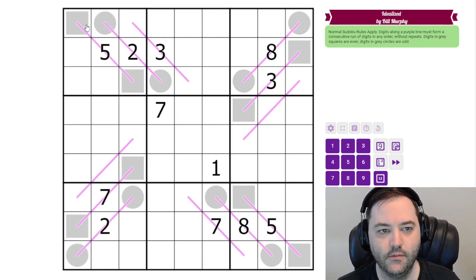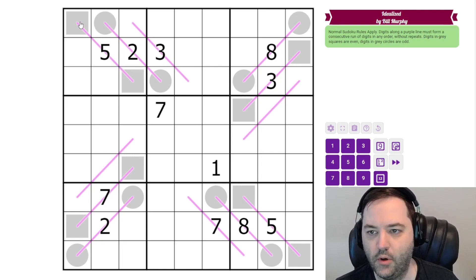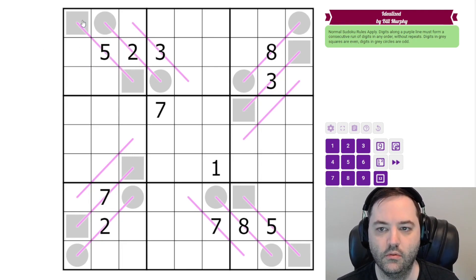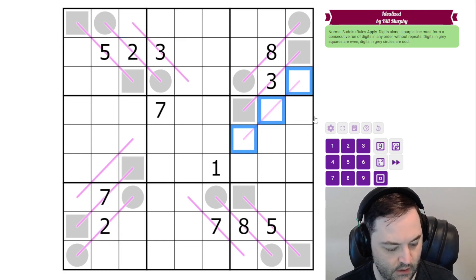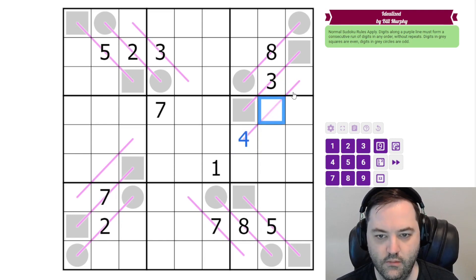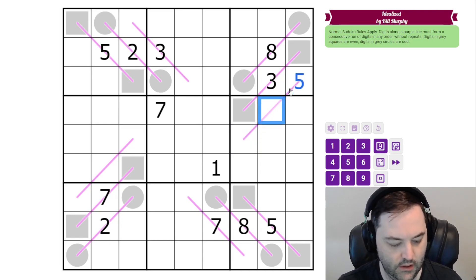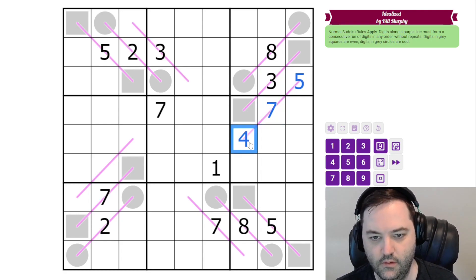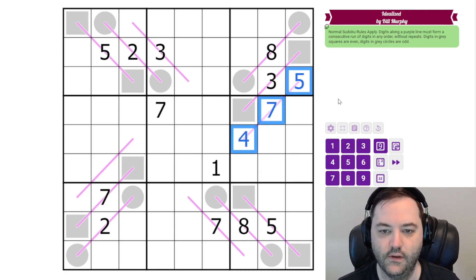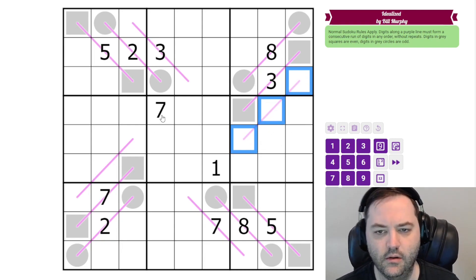Additionally, we have some purple lines. And along the purple lines, we need a run of consecutive digits. They don't have to be in order though. So let's just use this as an example. This could be something like four, six, five. But it couldn't be four, seven, five, because these are not consecutive, this is six.